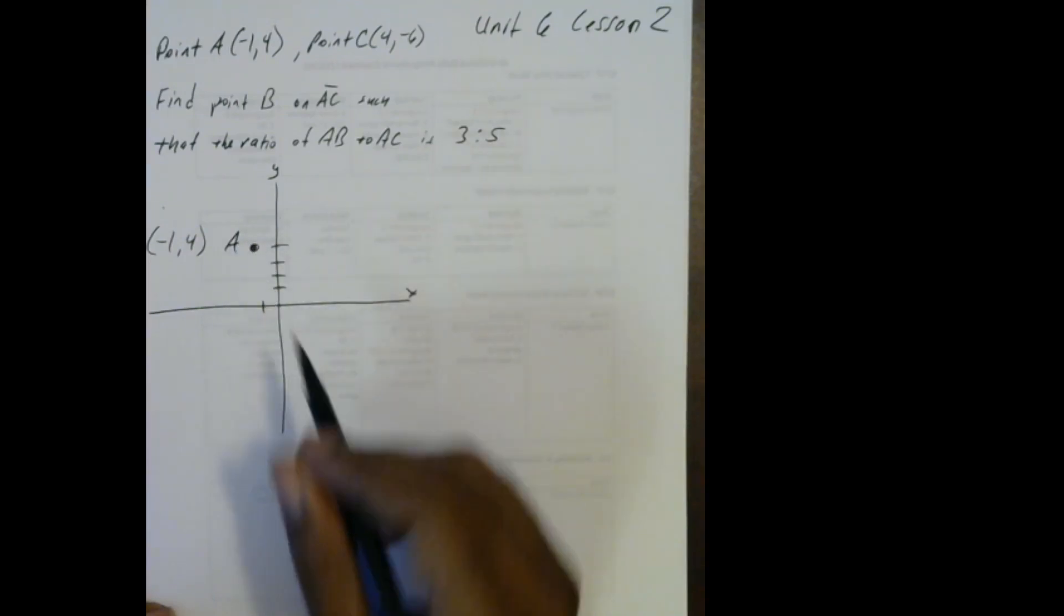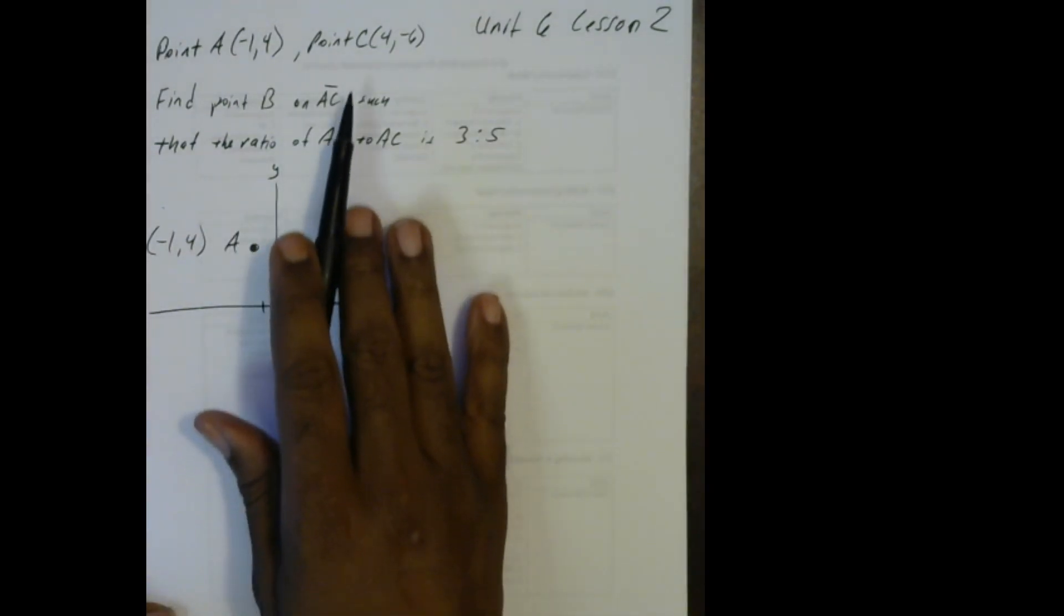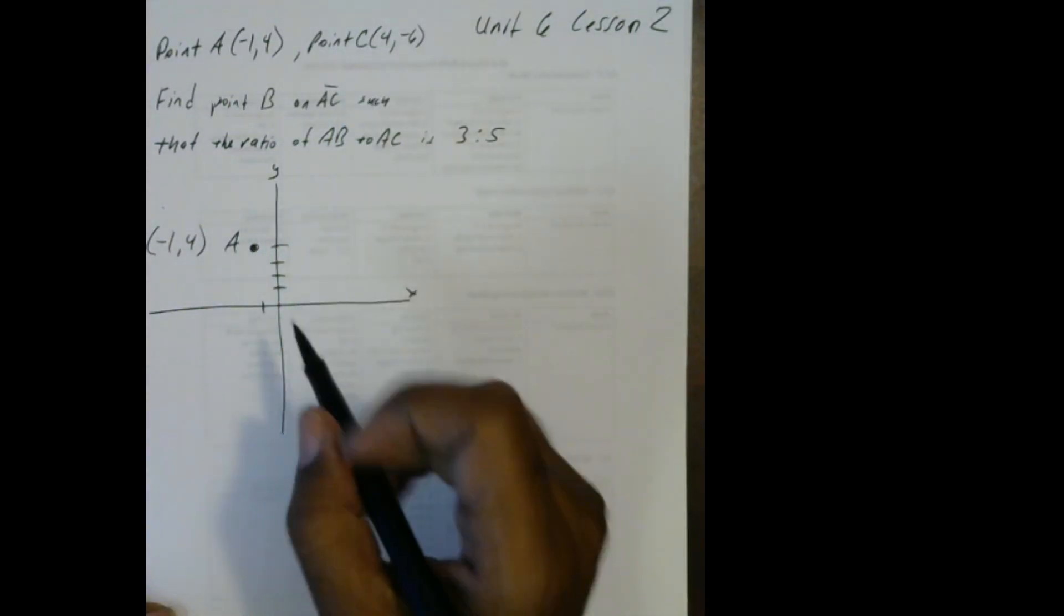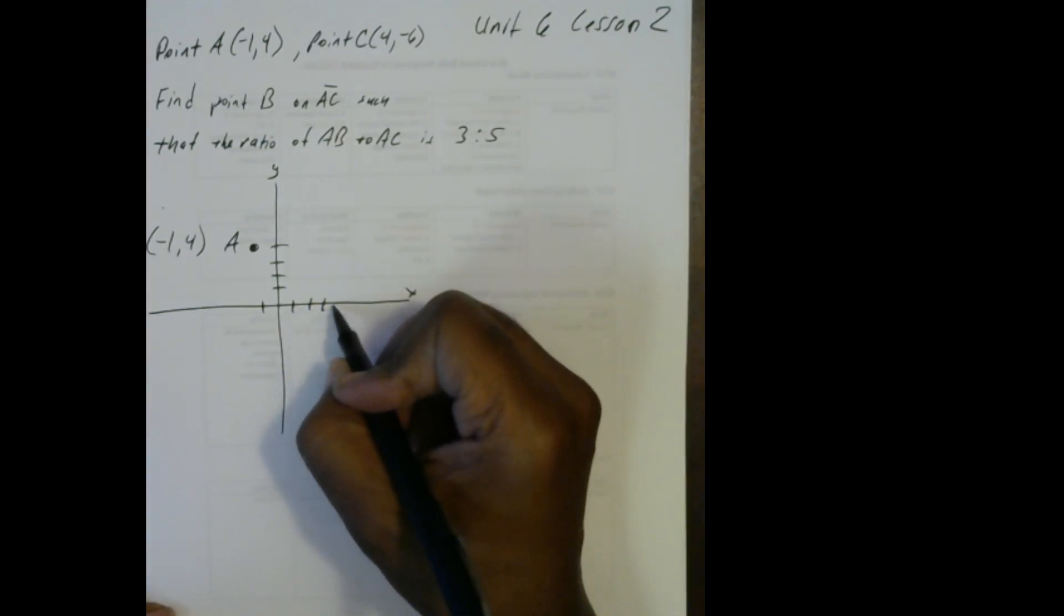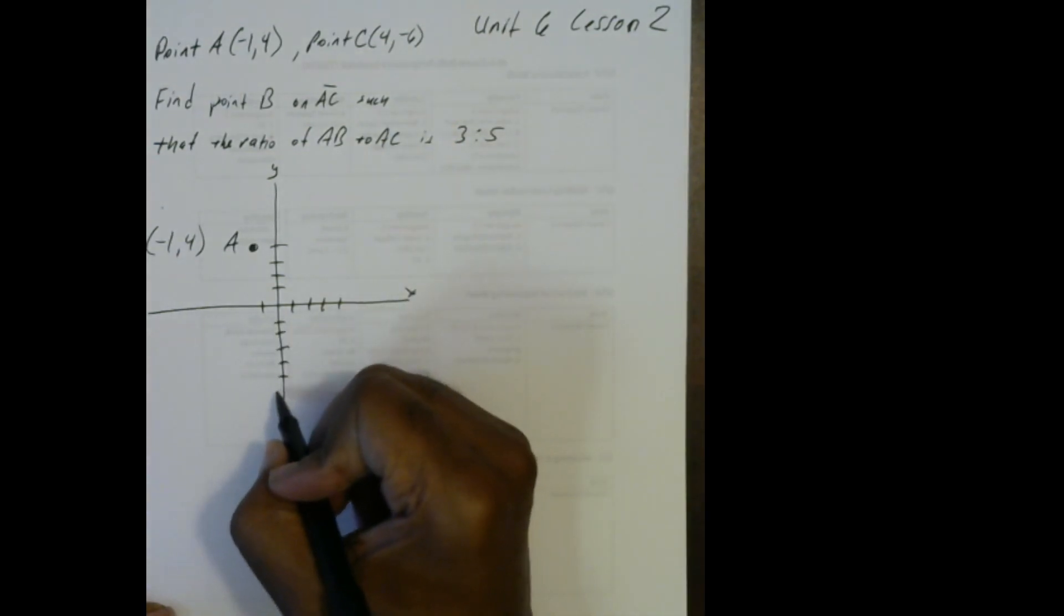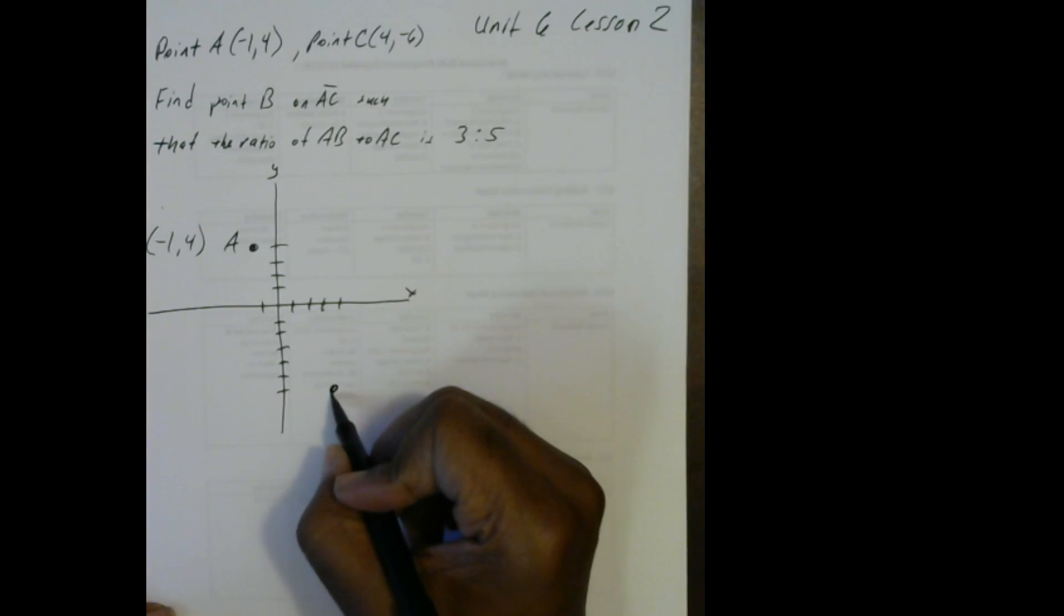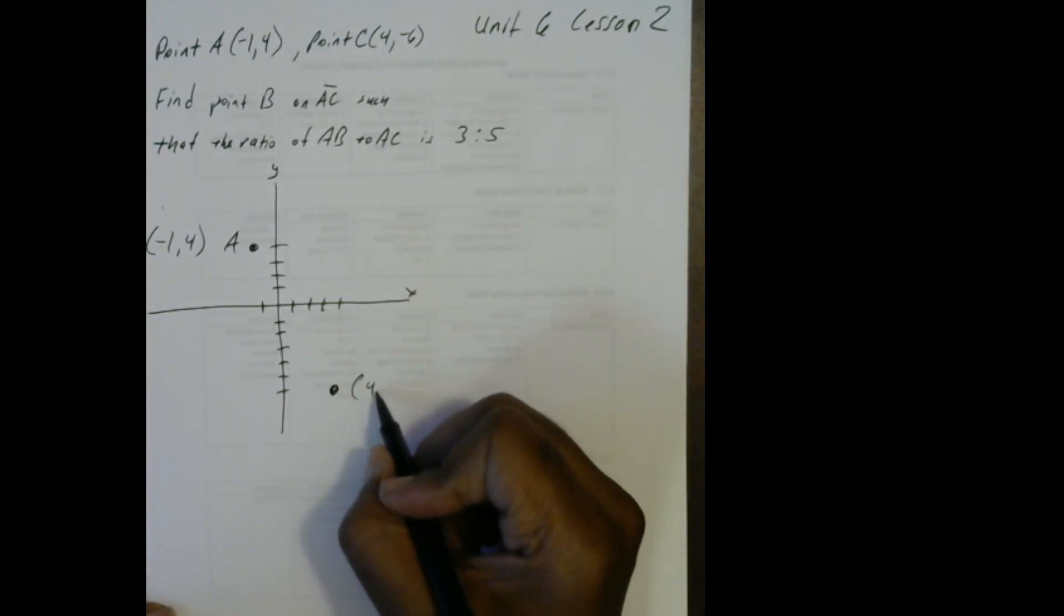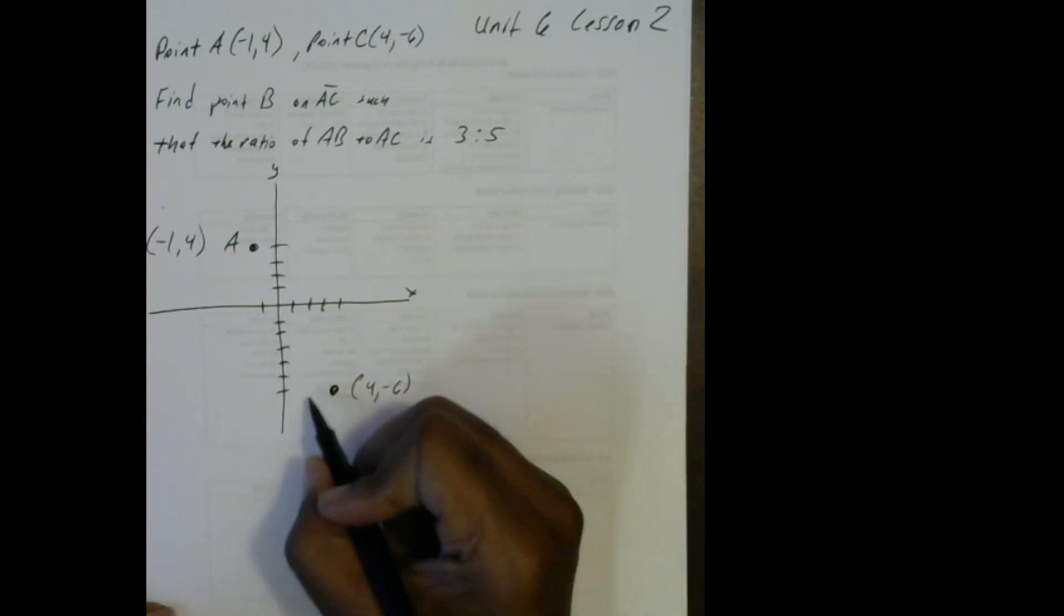Now let's go find point C. Point C is 4 out on x: 1, 2, 3, 4. And it's negative 6 on y: 1, 2, 3, 4, 5, 6. So that right there is our 4, negative 6, which is point C.